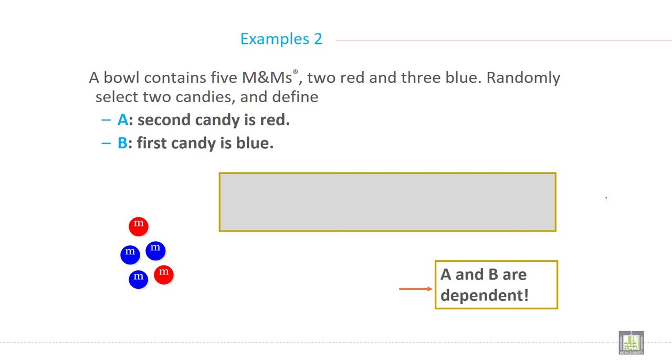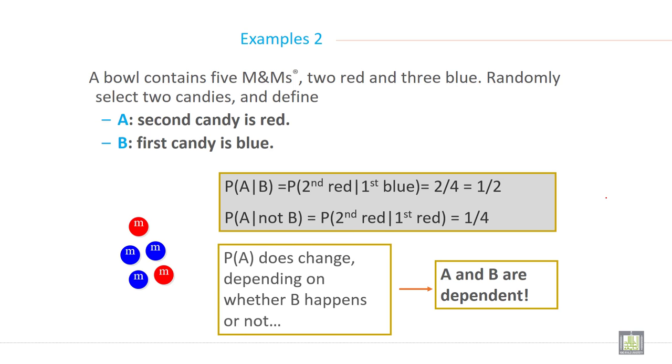A bowl contains five M&Ms, two red and three blue. Randomly select two candies and define A as second candy is red, B as first candy is blue. So here, probability of A given B, probability of second red given first blue, is 2/4, which is 1/2. And probability of A given not B equals 1/4.